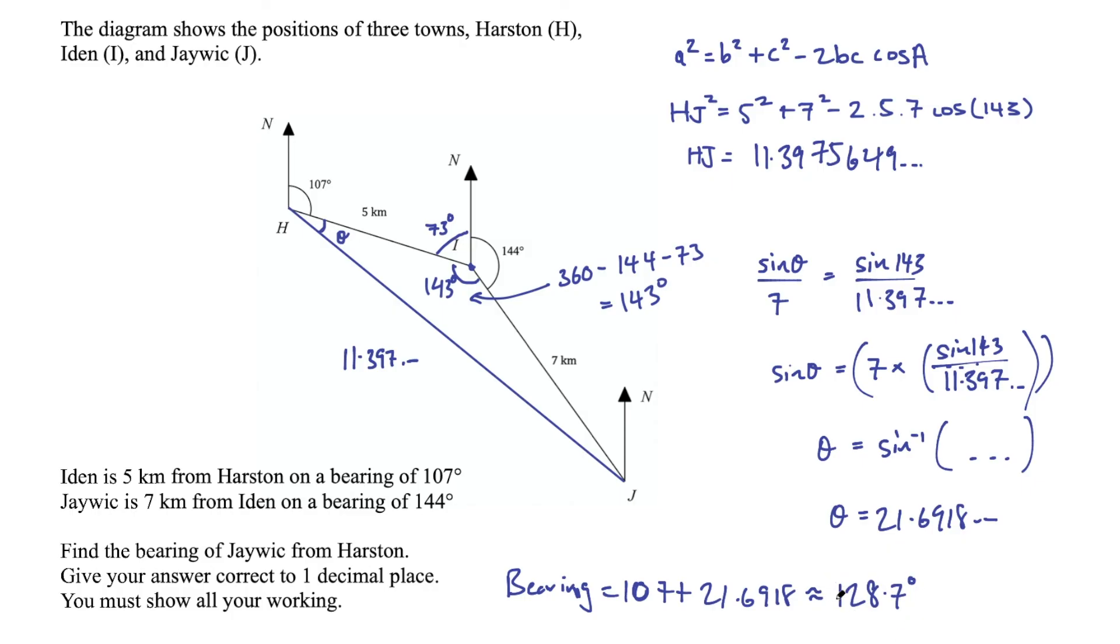And we don't need to put a zero at the front. If it was two digits, remember to put a zero. But because it's three digits in that bearing, we can leave that as is. And that should be fine for a final answer there. So that is an example of a problem-solving question involving bearings.